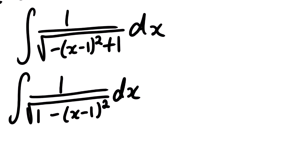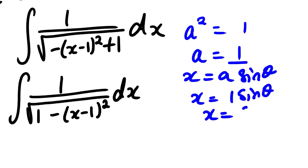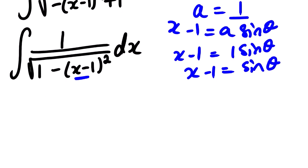With this information we can generate our equations. a squared is equal to 1, so a is equal to 1. Now x is equal to a sin theta. We know the value of a is 1, so it's x equals 1 times sin theta, which is the same as sin theta. But we need to be careful — the value of x in our substitution is actually x minus 1, so we put x minus 1 equals sin theta.